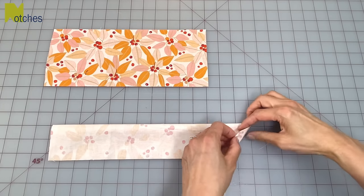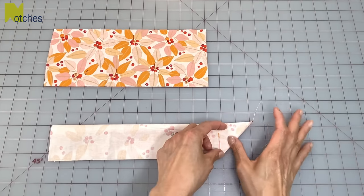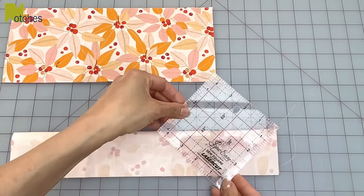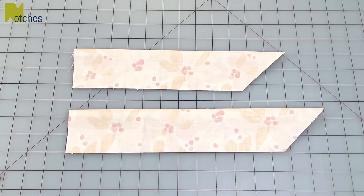You can easily do that by lifting the corner and matching the side edges to the fold and then just creasing that 45 degree angle. You can also use a quilting ruler and cut.